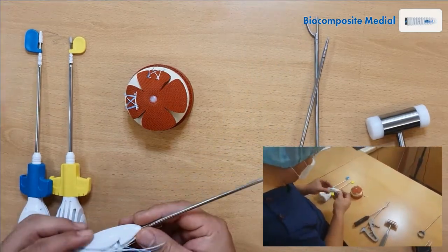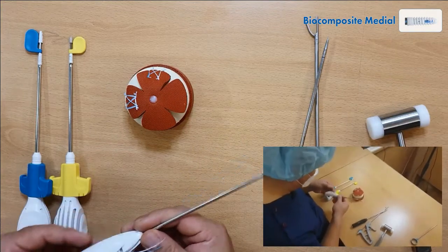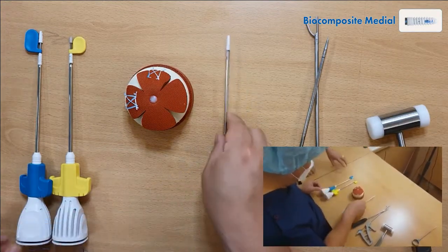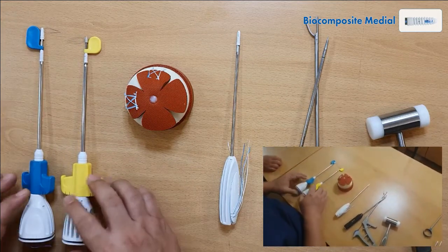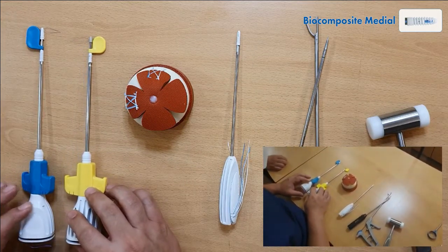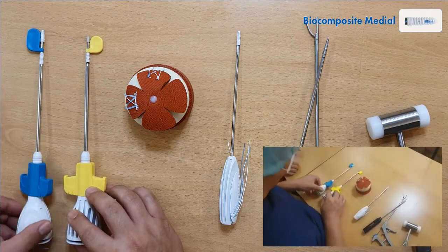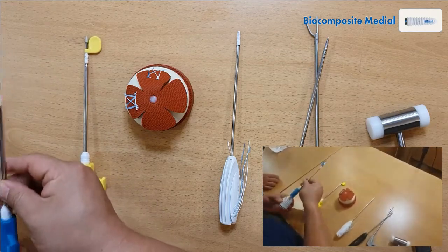This is biocomposite and this is two fiber tapes and one fiber wire. And the lateral anchor that I'm going to use is the one also made by Osteonic. It's biocomposite lateral and this is the Helmex type and this is biocomposite lateral anchor.